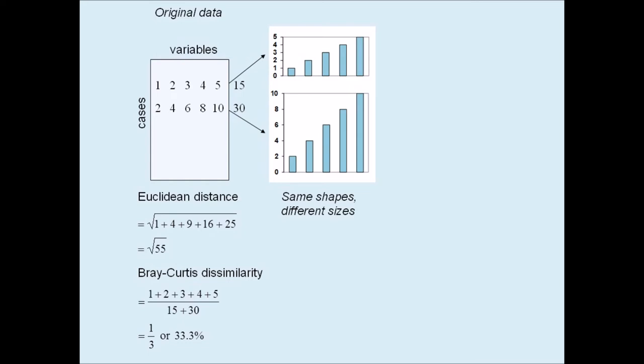Both these proximity measures would increase if the second sample is increasingly bigger than the first while they both maintain the same shape, that is, the same relative counts. So the Bray-Curtis is definitely sensitive to differences in the total counts.